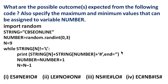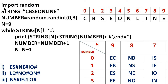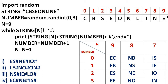Next we will see the possible outcomes. Here is our program. We have 'import random', then a variable string equal to the string value 'cbc online'. The index values of all these characters go from 0 to 9. Then number equals random.randint(0, 3), so the variable number takes values from 0 to 3. There is also a variable n with an initial value of 9, and at index 9, the character 'e' is there.